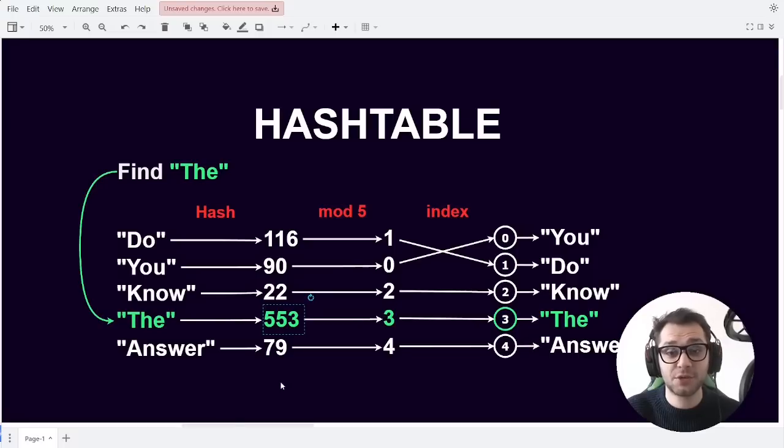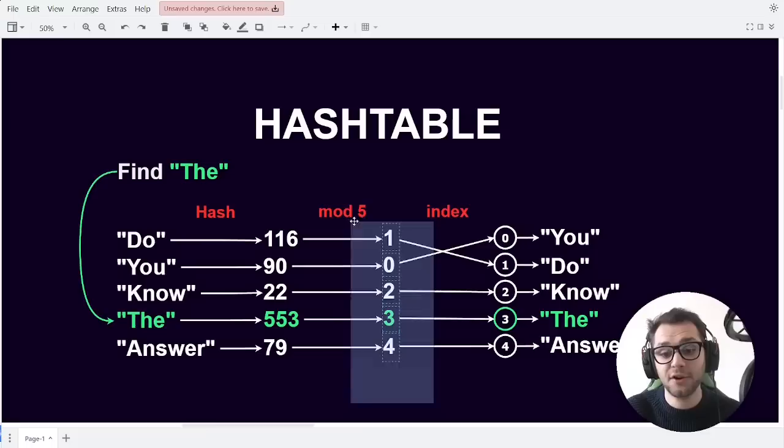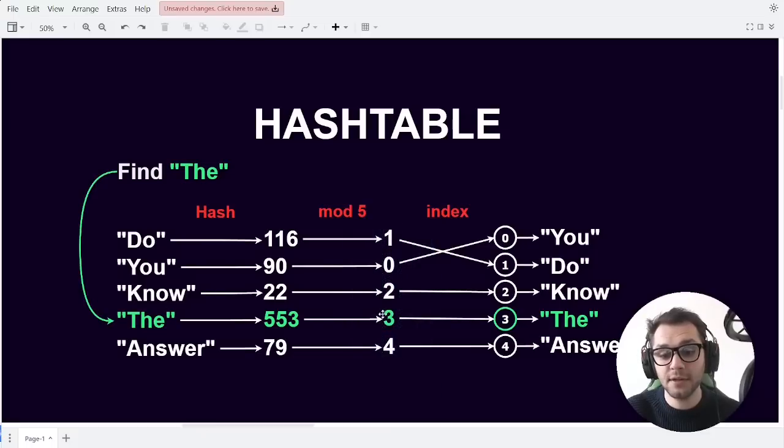After calculating the hash we take the hash modulo 5 to get the index of our item. In case of the word "the" the index is 3 and thus we place or find the word "the" at the third index. The reason we do modulo 5 is because 5 is the size of the list in which the items are stored.